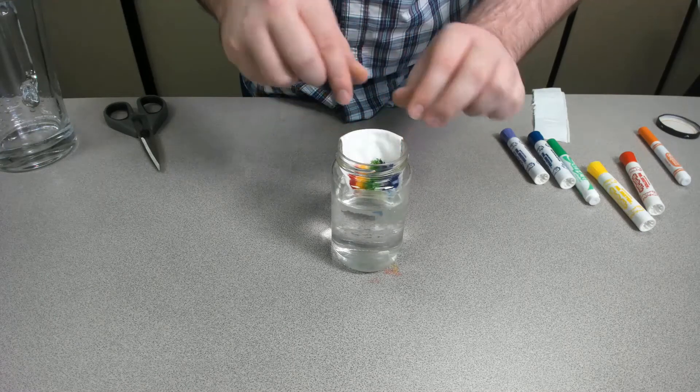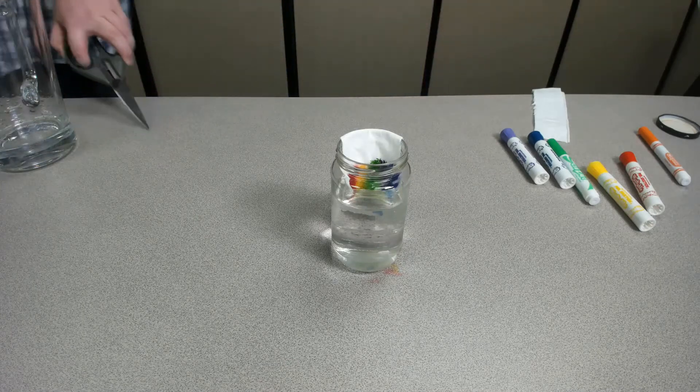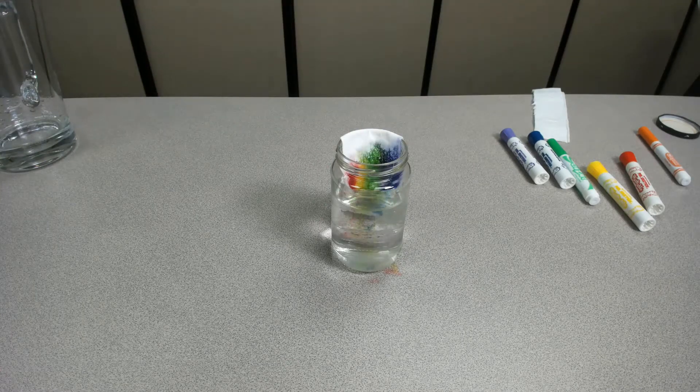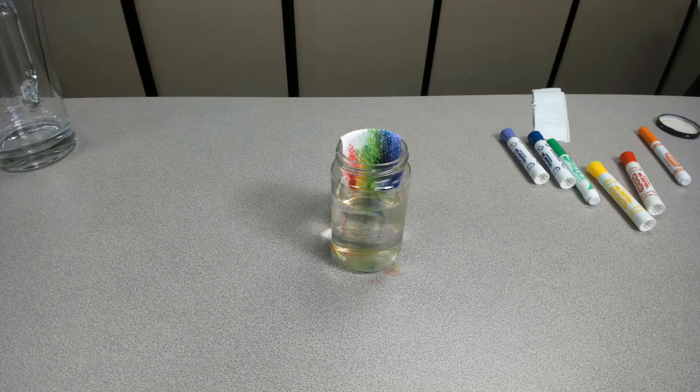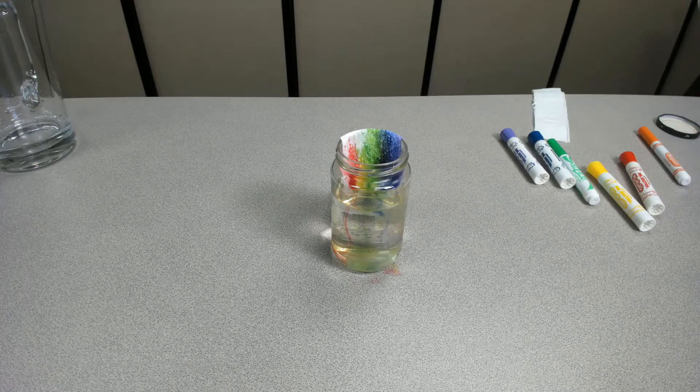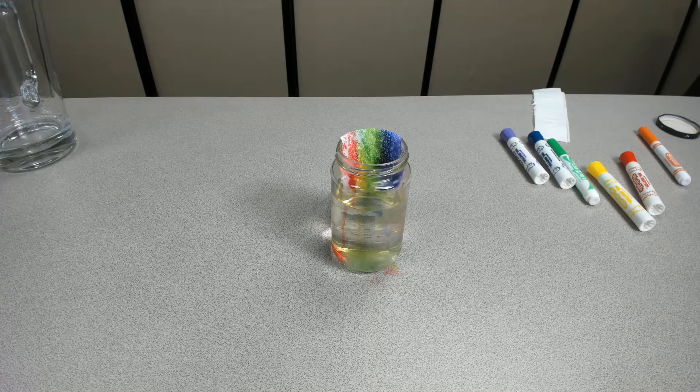What you will see next is because of something called capillary action, which is the liquid's ability to travel through narrow spaces against gravity, just like how trees suck up water from the ground. As our towel sucks up the water, it runs through our rainbow and picks up the color from our washable markers, running the rainbow all the way up our napkin.